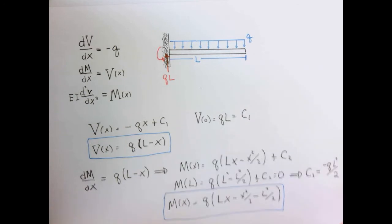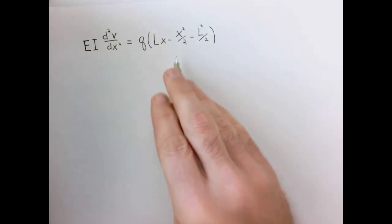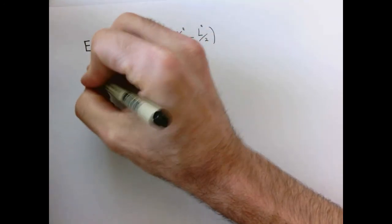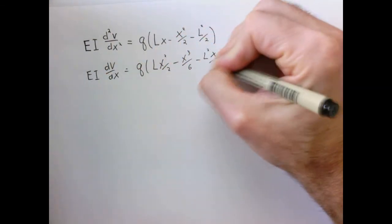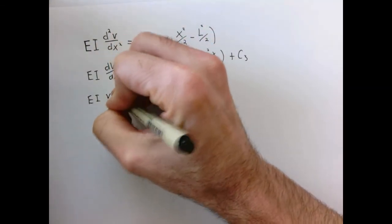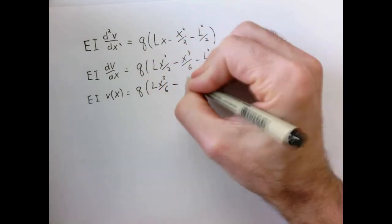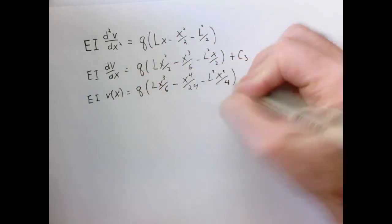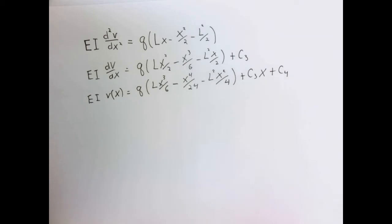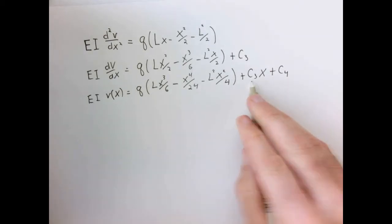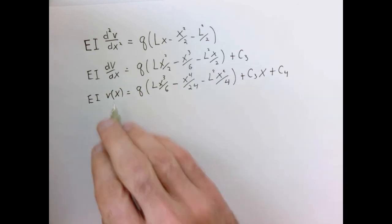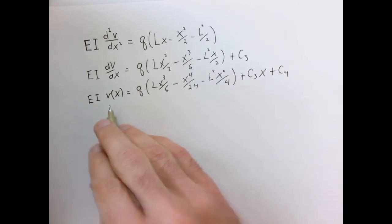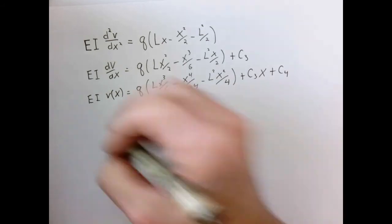Now let's turn to the deflection equation. I need to integrate the moment expression twice, which gives us two new constants of integration, C3 and C4. So I'll need two boundary conditions on the deflection in order to determine what those are.